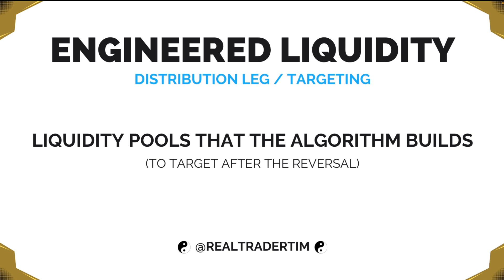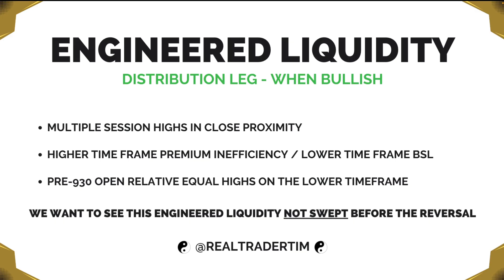The definitional framework for engineered liquidity during the distribution leg — or for targeting purposes — is that they are liquidity pools that the algorithm builds to target after the reversal or manipulation has already occurred. For the bullish distribution leg, we want to see multiple session highs in close proximity, higher time frame premium inefficiencies close to lower time frame buy-side liquidity pools, and pre-9:30 open relative equal highs on the lower time frame.